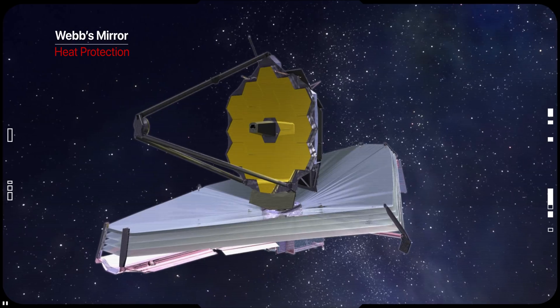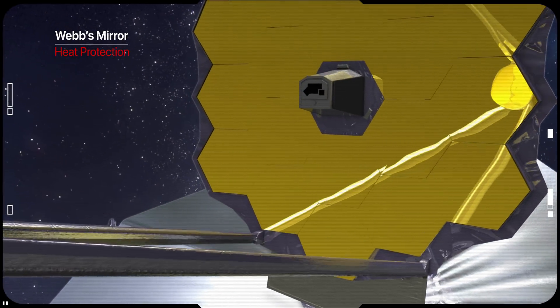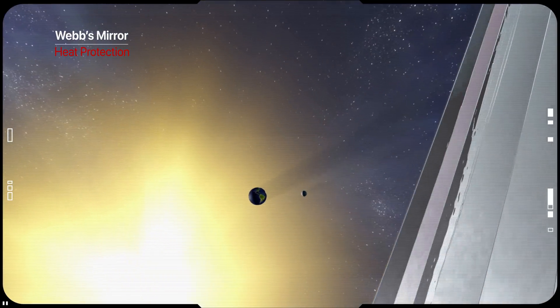To keep Webb cold, it will be sent into deep space, far from the Earth. Sun shields will shade the mirror and instruments from the sun's heat as well as keep them separate from the warm spacecraft bus.